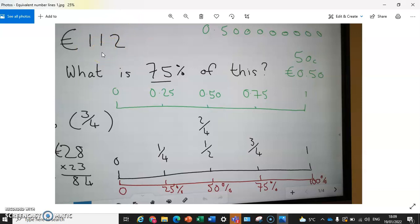So if we take 112 as our whole amount and we want to know what 3 quarters is, the first thing that we'll do is we'll divide it by 4, the number on the bottom, to see what 1 quarter is. And we did 112 divided by 4, you can do that on the calculator, 112 divided by 4, you get 28.